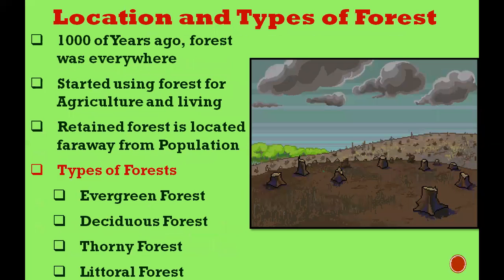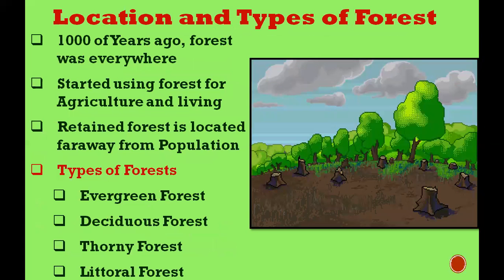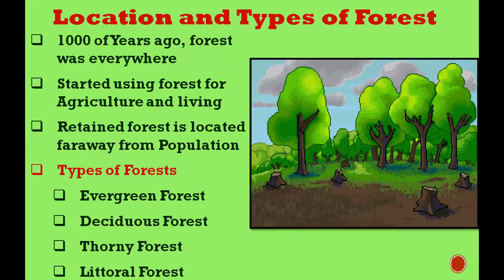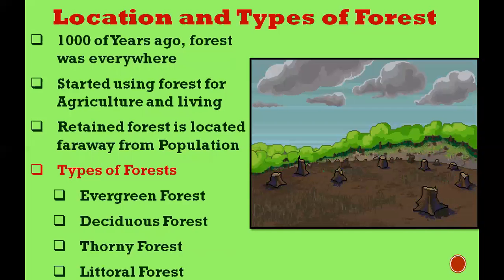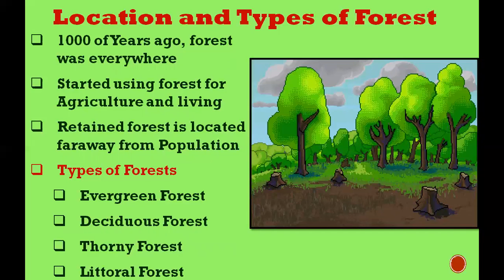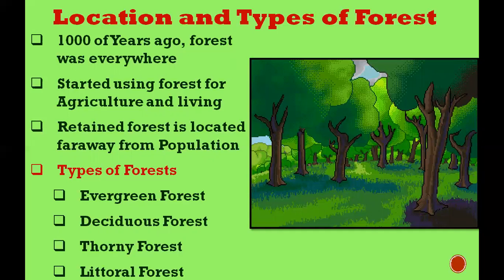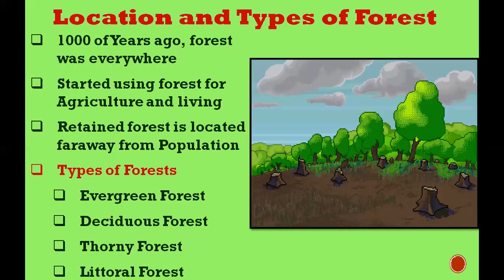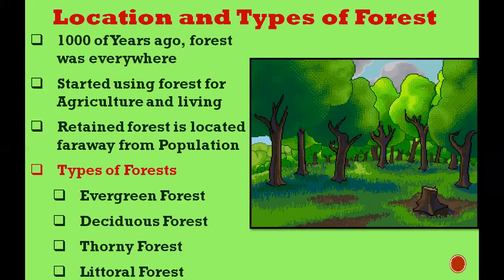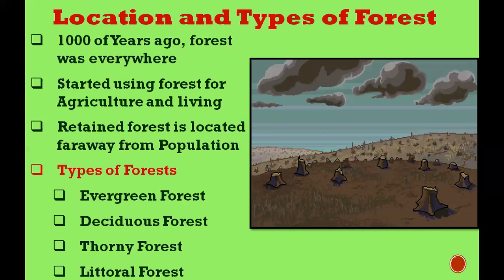Thousands of years ago, forests were found everywhere there was water and soil. Slowly, as people started agriculture, they cut forests to use the land for growing crops, and villages and towns came up. Today, forests are confined to tracks not useful for agriculture — regions that are hilly, swampy, rocky, too cold, or far away from population centers.